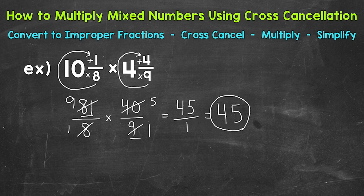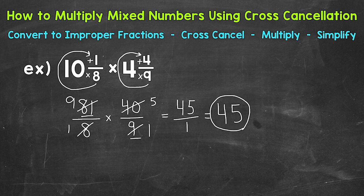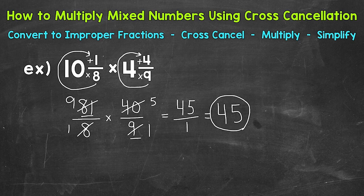Now if we did not use cross cancellation, we would have to multiply 81 times 40, and then 8 times 9, and then simplify from there — and eventually we'd get the same answer. Cross cancellation is a useful tool when we have multiplication problems that involve fractions. It gives us smaller and easier numbers to work with, therefore a simpler problem to solve. Keep in mind we can't use it for every problem — we have to have common factors other than 1 between our numerators and denominators.